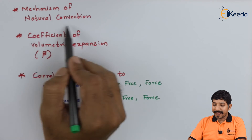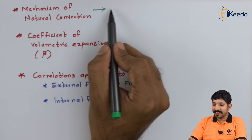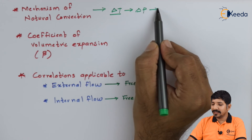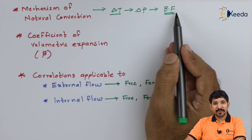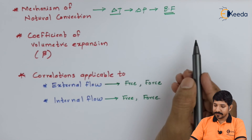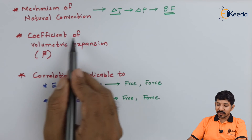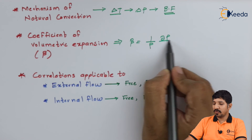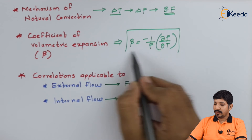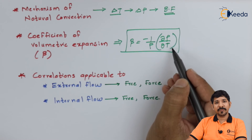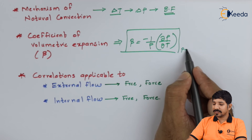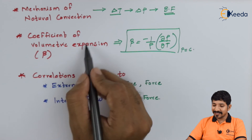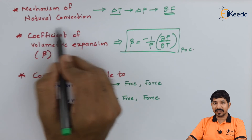We also discussed the basic mechanism of natural convection. A change in temperature causes a change in density, which in turn causes a buoyant force — and it is this buoyant force that is responsible for natural convection. We also covered the volumetric coefficient of thermal expansion, beta, defined as (−1/rho)(∂rho/∂T) at constant pressure. This tells us how density changes with temperature per unit density, and is essential to know how efficient natural convection is for a given fluid.